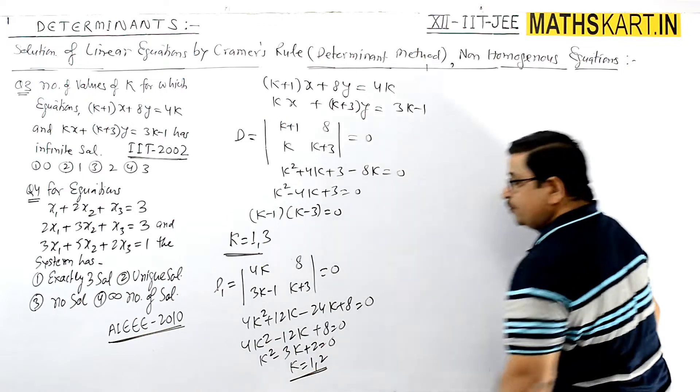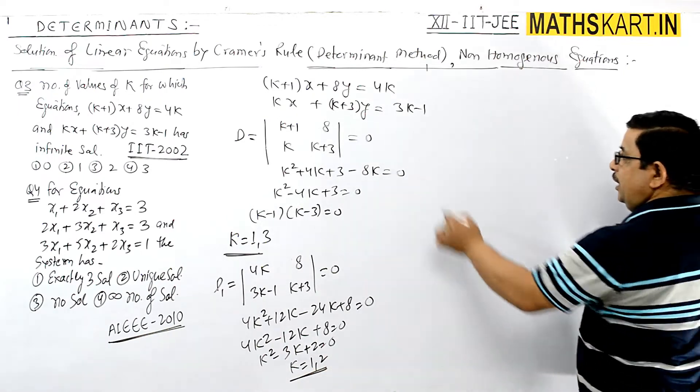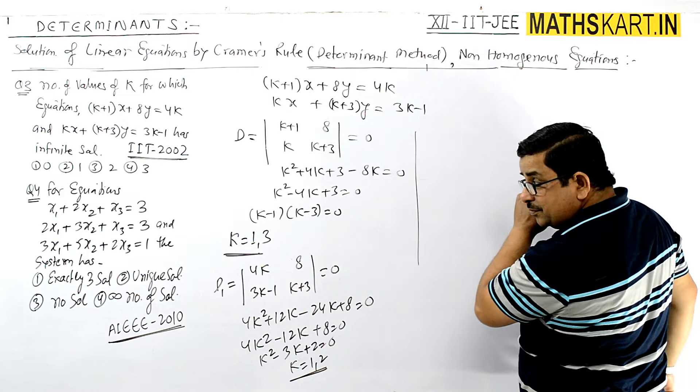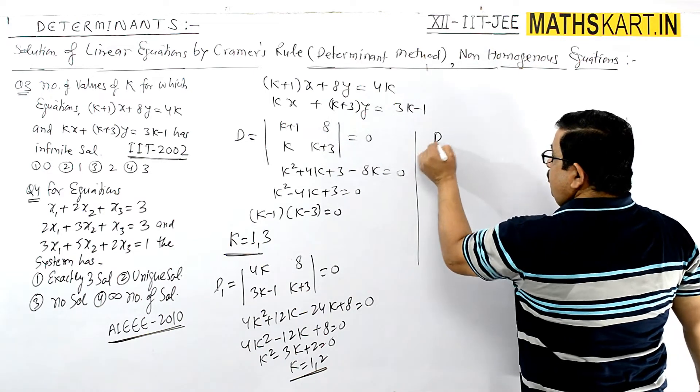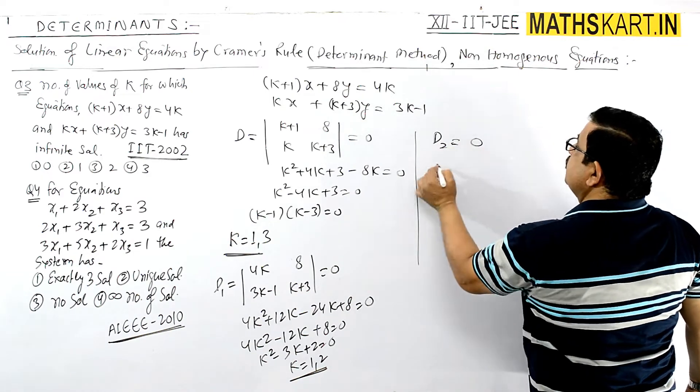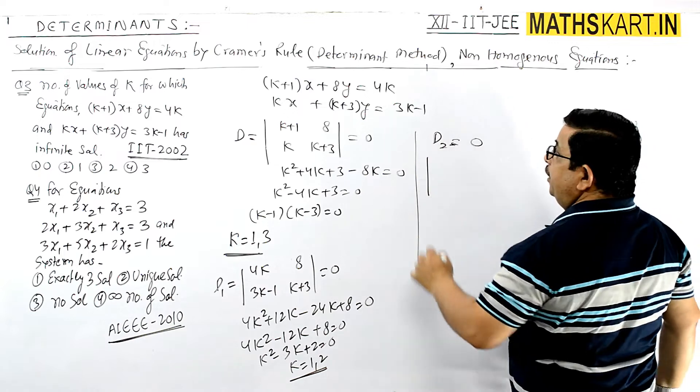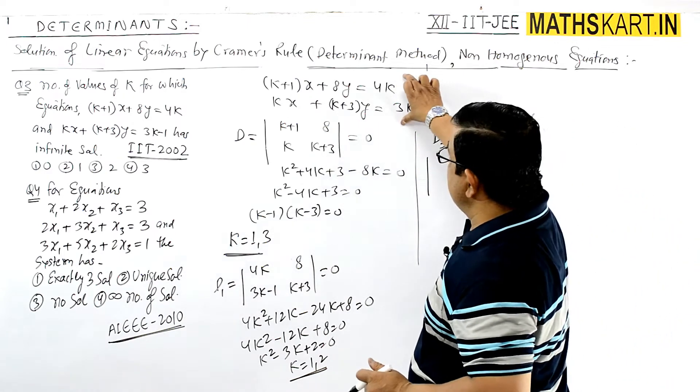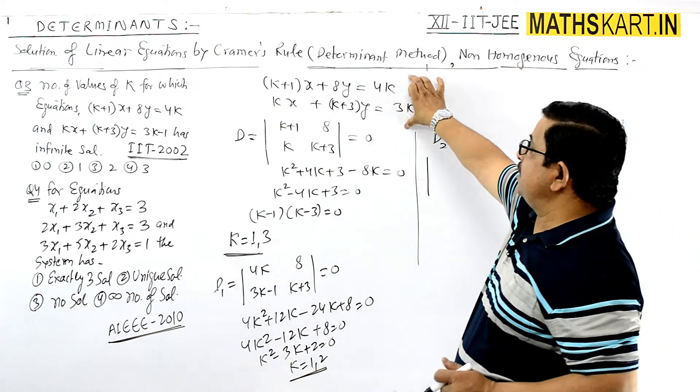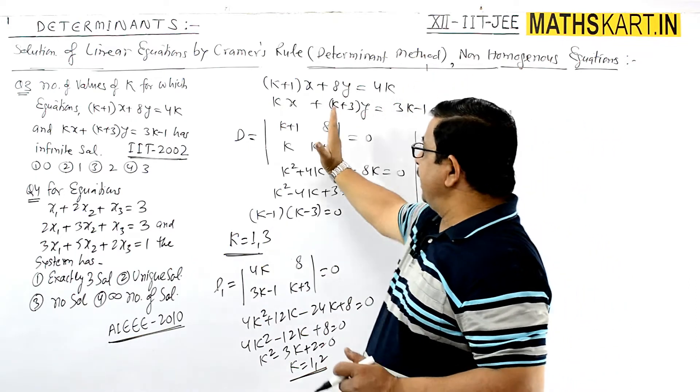This gives k = 1 or k = 2. Now for D2 = 0, the second column changes to the constant values.